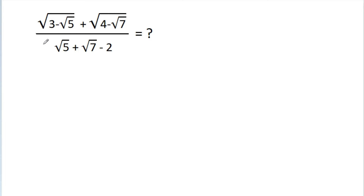In this video, we have to simplify square root of 3 minus square root of 5, plus square root of 4 minus square root of 7, divided by square root of 5 plus square root of 7 minus 2.